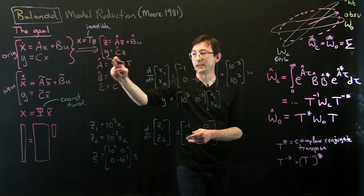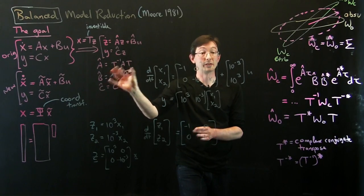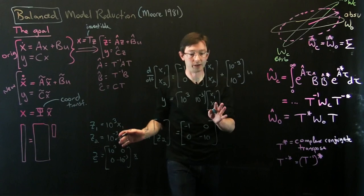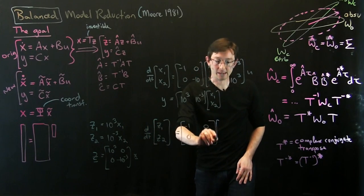You can verify. You can go through this procedure and figure out that your A matrix doesn't change because it's diagonal and this is diagonal. So nothing changes. This is z1, z2.